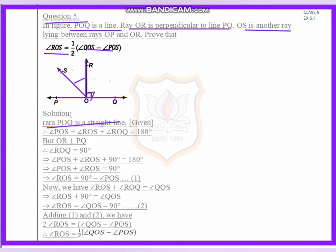First of all, we know that POQ forms a straight line. This means the sum of these three angles equals 180 degrees. Here one angle ROQ is 90 degrees.